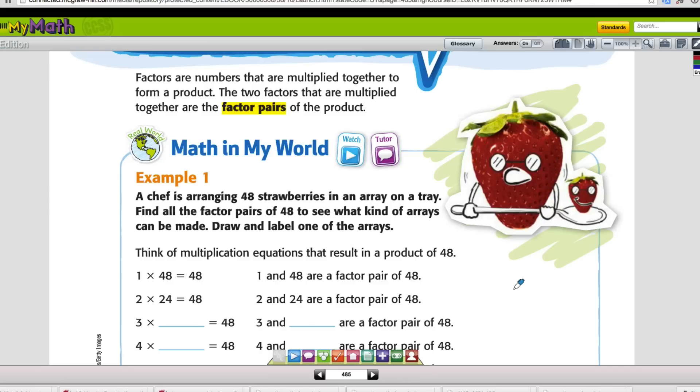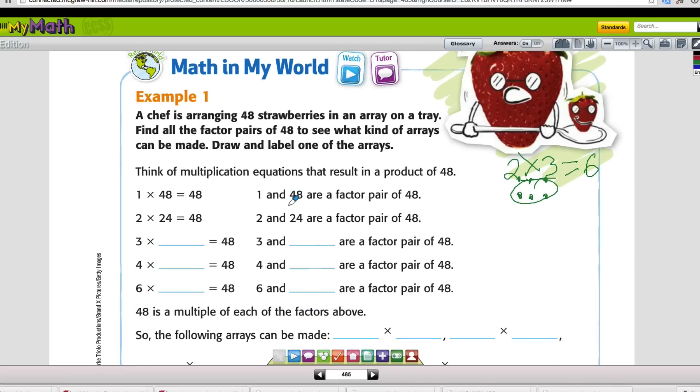If you remember back in our multiplication chapter we talked about arrays. Arrays are simply the rows and columns of any object. We're going to use dots in this case. This factor pair has 3 in each row and we have 2 rows for a total of 6 dots. So the multiplication problem that this array represents is 2 times 3 equals 6. This is our array.